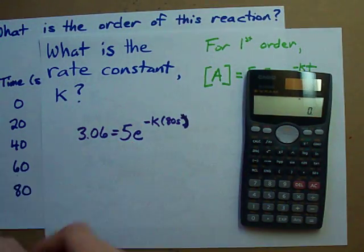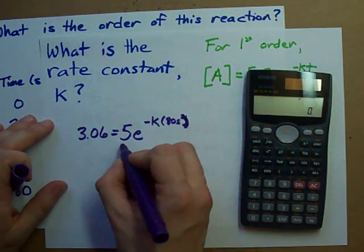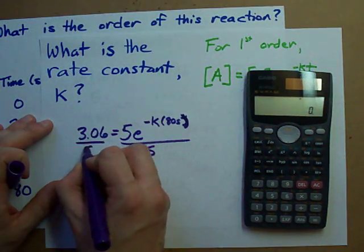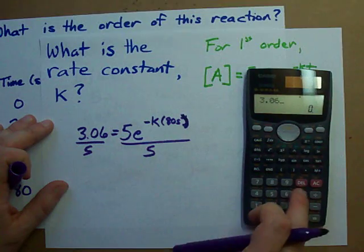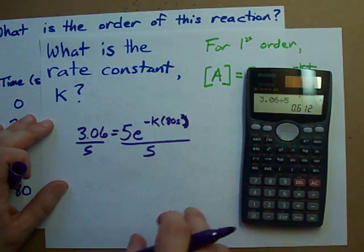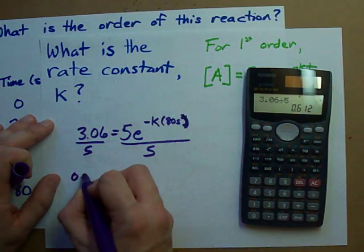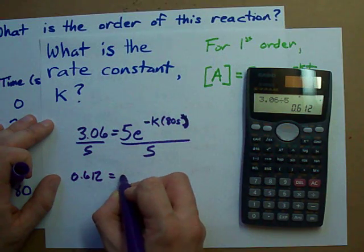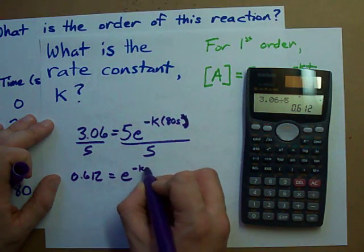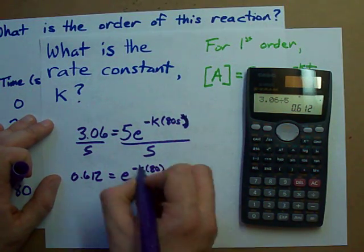First thing, get rid of the number in front of the E. Divide both sides by 5. 3.06 divided by 5 gives me 0.612 is E to the negative K times, I'm just going to truncate that to 80.